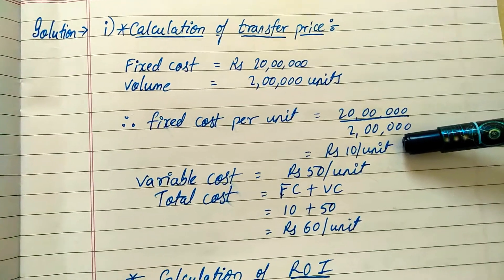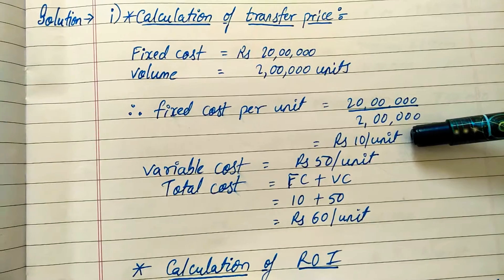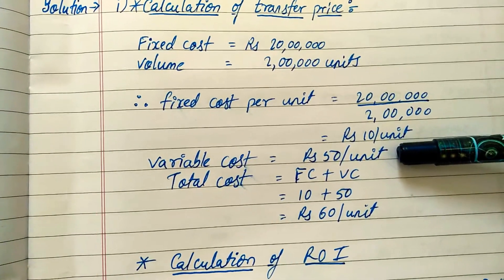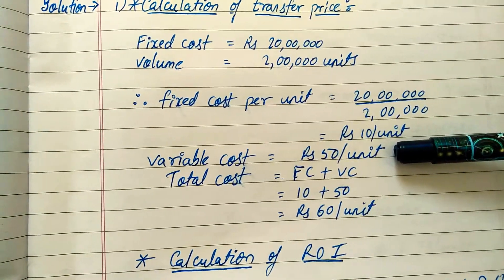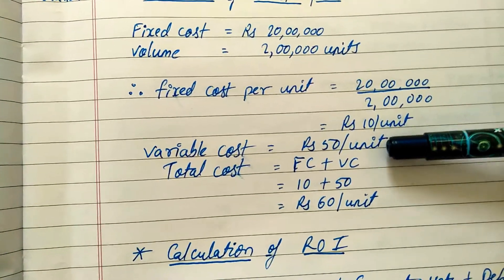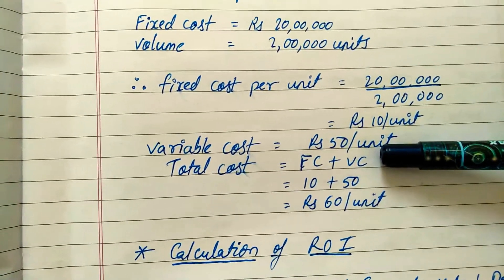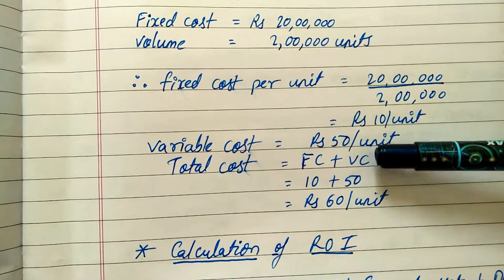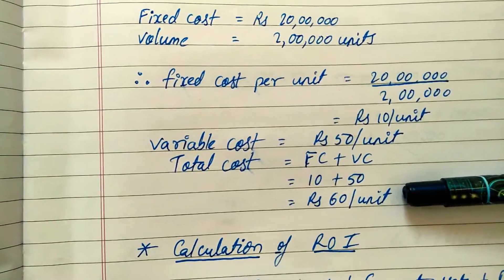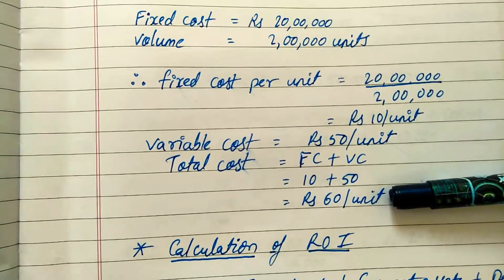The variable cost is already given in the question as ₹50 per unit. To calculate the total cost per unit, we add fixed cost and variable cost: ₹10 plus ₹50 gives us ₹60 per unit. So the total cost per unit is ₹60.